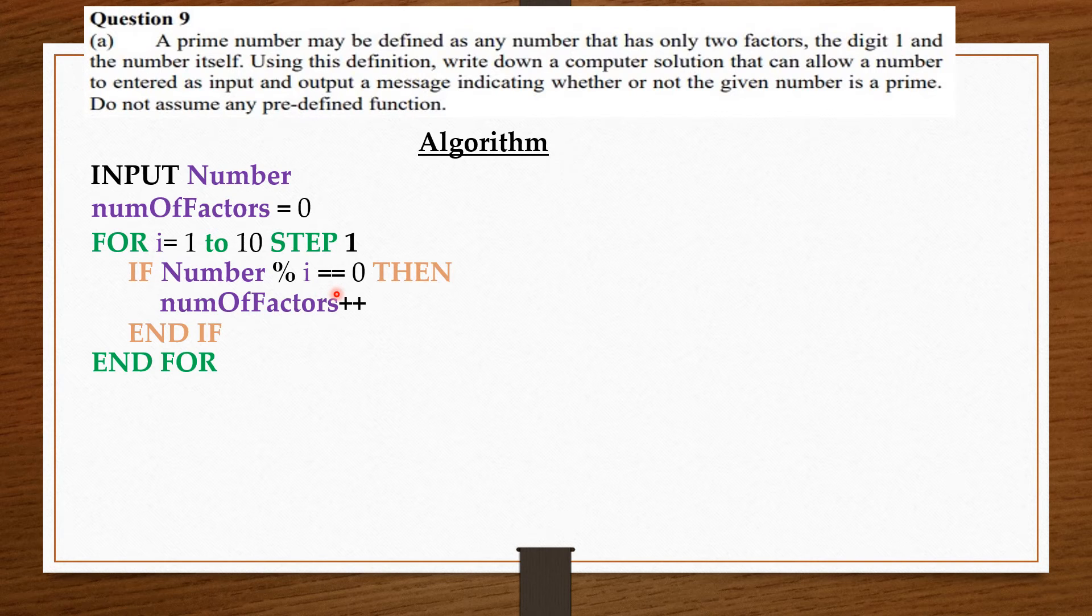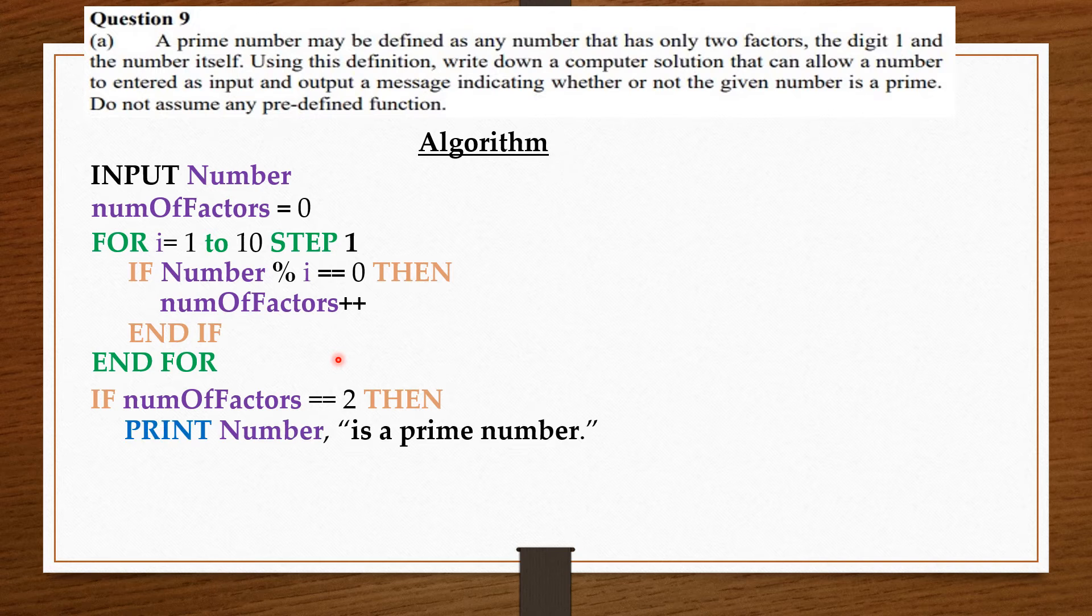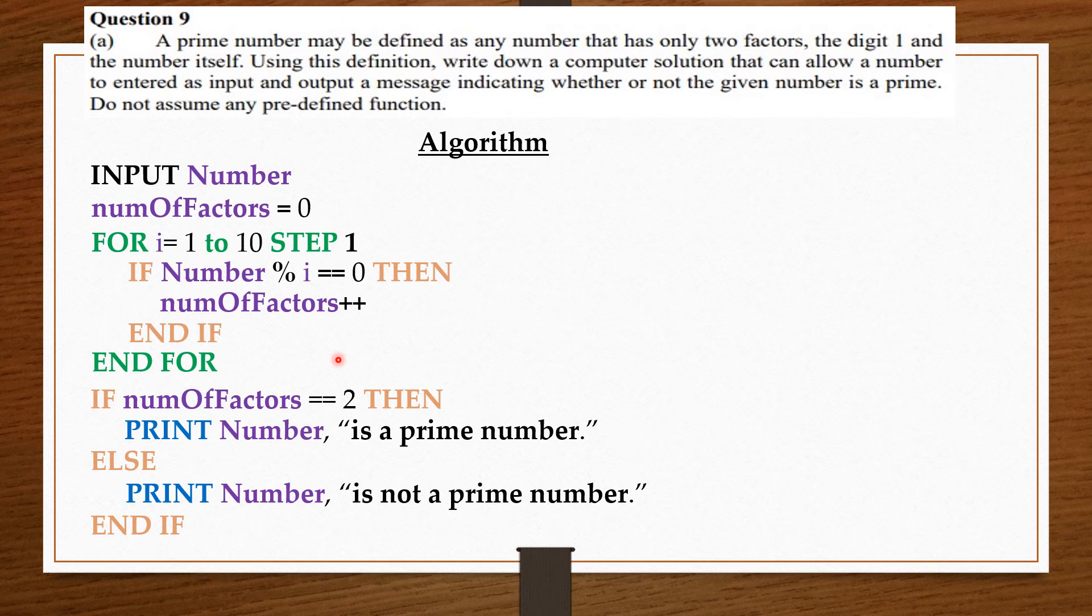So now that we know the number of factors, we are going to check if the number of factors is equal to two, then we should print that the number is a prime number. Else, we should print that the number is not a prime number. So again, the idea is that a factor goes into its number without any remainder. That is why we have the number modulus i equals zero. If that number has a remainder of zero, then it's a factor of that number, and then we increase it. Let's convert the algorithm to code in C++ and see how it goes.